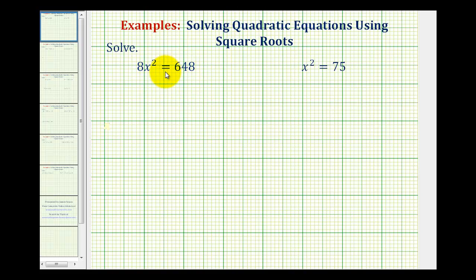So to solve 8x² equals 648, the first step is to divide both sides of the equation by 8. Eight divided by eight is equal to one, so now we have x² on the left side of the equation. And on the right side, we have 648 divided by 8.